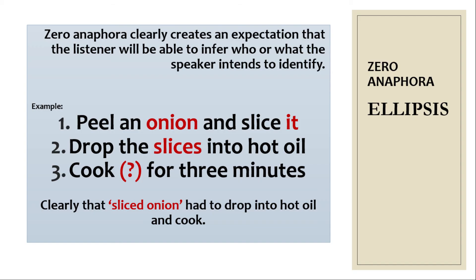Anaphor referents do not always refer to the same object. For example: 'Peel an onion and slice it. Drop the slices into hot oil. Cook for 3 minutes.' This is called Zero Anaphor, because it creates an expectation that the listener will be able to infer who or what the speaker intends to identify.